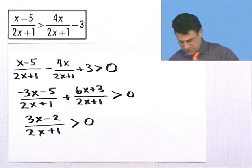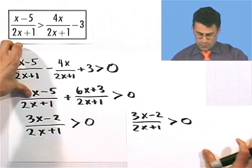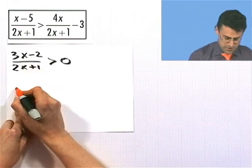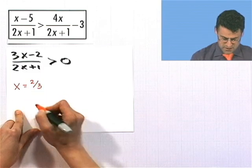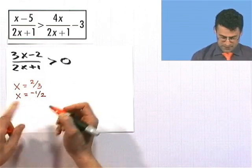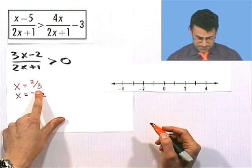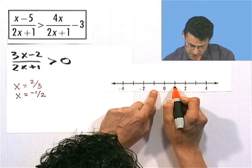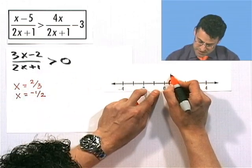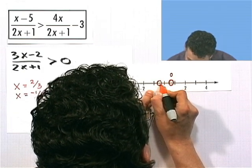Now I'm in position to do the analysis: 3x minus 2 divided by 2x plus 1, greater than 0. The critical points are where the numerator equals 0 — that's when 3x minus 2 equals 0, so x equals 2 thirds — and where the denominator equals 0 — that's when 2x plus 1 equals 0, so x equals negative 1 half, which is undefined. On the number line, 2 thirds is two-thirds of the way toward 1, and negative 1 half is right between negative 1 and 0.